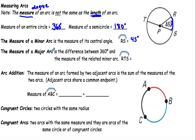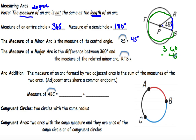The measure of a major arc is the difference between 360 and the measure of the related minor arc. So if we look at arc RTS, that arc is going to be 360 minus 45. So 360 minus 45 gives me 315 degrees.